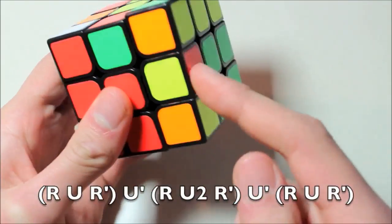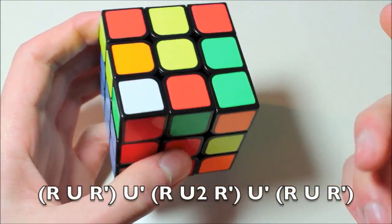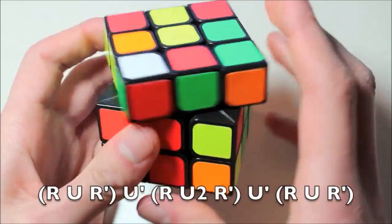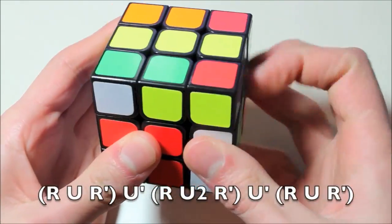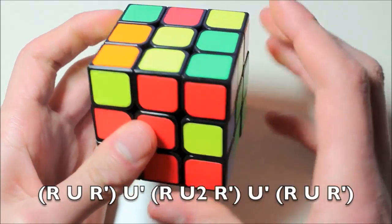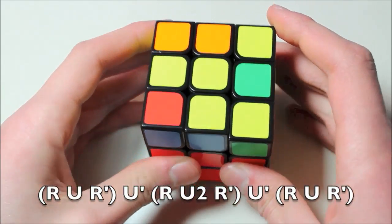And I'm now left with this case, which I can solve with U' R U2 R' another U' then R U R' to finally insert the pair.